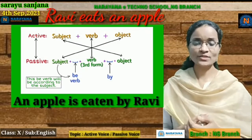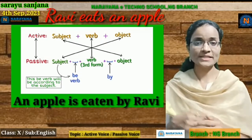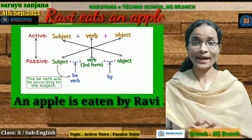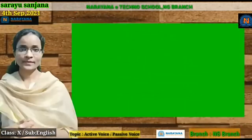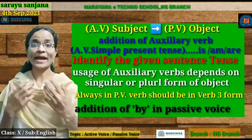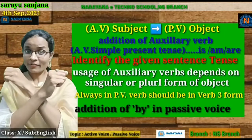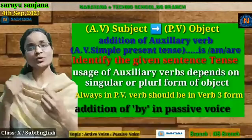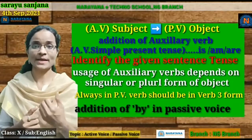Depending on the tense, we need to write the appropriate auxiliary verb. In active voice, the subject comes first, later the object. Whereas in passive voice, the object comes first, later the subject. To change a sentence from active voice to passive voice, remember the formula of X: the subject is going to become the object, and the object is going to be replaced in the place of the subject.